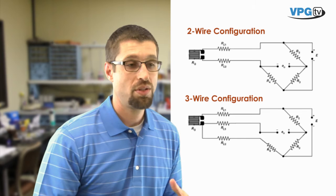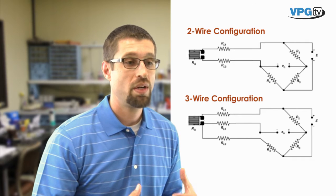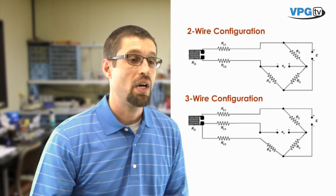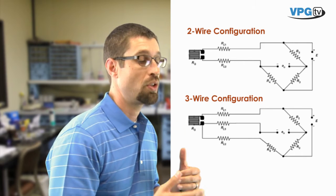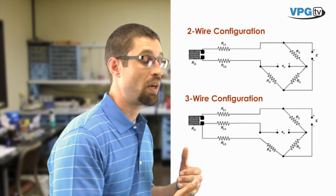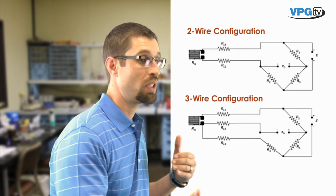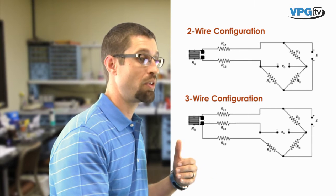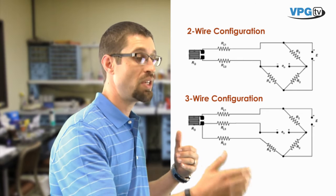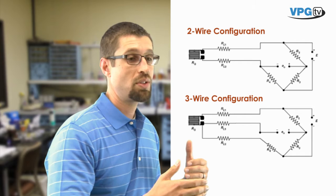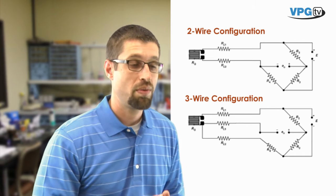The second issue is going to be error introduced into your reading from temperature fluctuation during your testing. As the temperature changes, you have resistance changes within the lead wire and of course the longer the lead wire is, the more resistance you have and the more temperature change you have during your testing, the more resistance change you have and that resistance change in a two-wire setup actually introduces error into your readings.